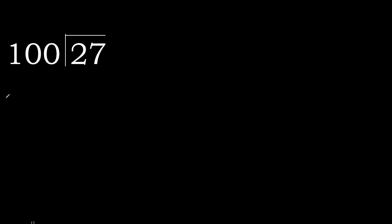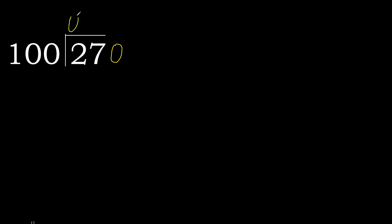27 divided by 100. 2 is less, therefore next. 27 is less, therefore next. There is no number, therefore complete. Always complete with 0. Here: 0 point.